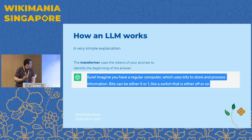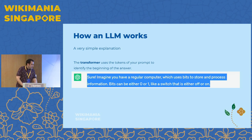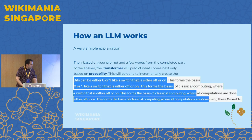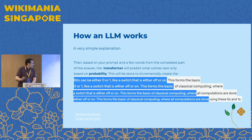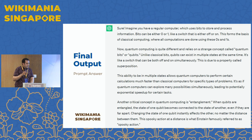How is the answer generated? The transformer uses the tokens of your prompt to identify the beginning, and then uses probability to complete the answer. It takes the question and auto-completes the answer word by word — as you see here in blue — until it is finished. After this incremental approach is complete, you get the whole paragraph.